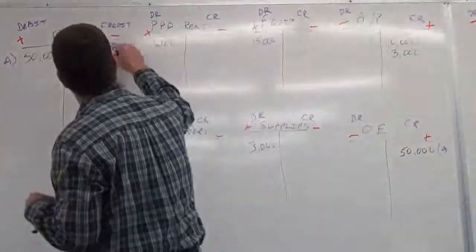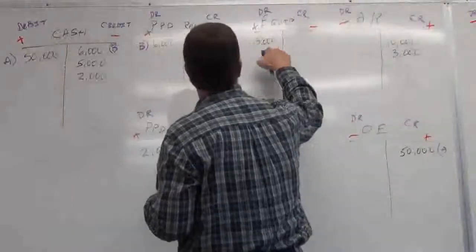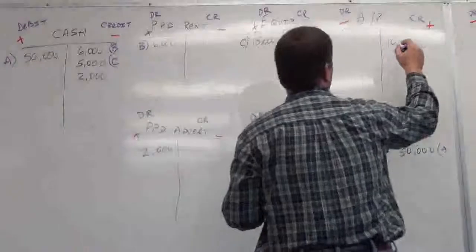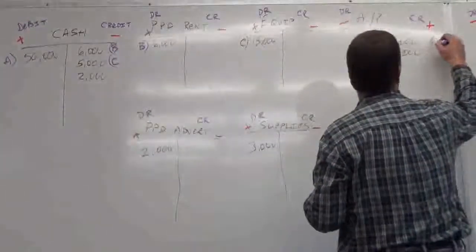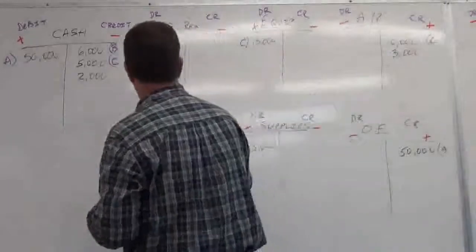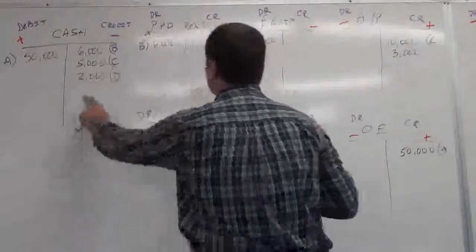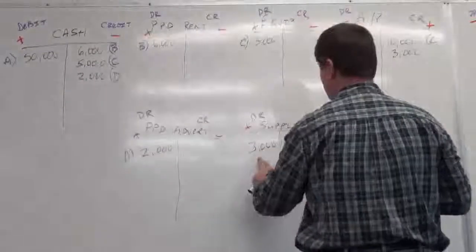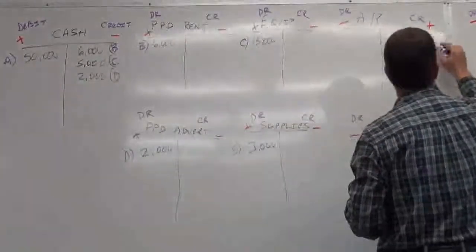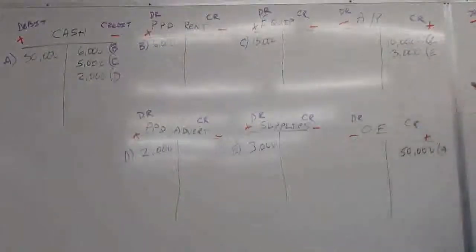Supplies: we bought some supplies. Supplies are an asset — $3,000 debit. Paid for it with accounts payable — accounts payable increases on the credit side. So my debit equals my credit. For every debit there is a credit; for every credit there is a debit. Each transaction gets a letter label — D for advertising, E for supplies — tying entries together across accounts.